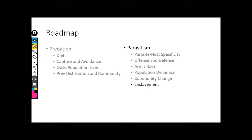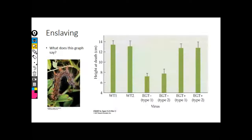The very last thing I want to talk about is enslavement. This is a very parasite-only thing. All of these other things we've discussed have a clear parallel between parasites and predation, which is why they belong in the same unit together. Enslavement is very uniquely a parasite or parasitoid phenomenon. Let's look at this graph — what is this graph telling me?